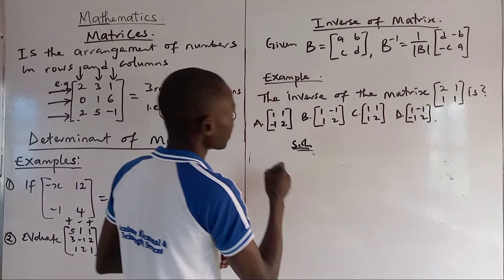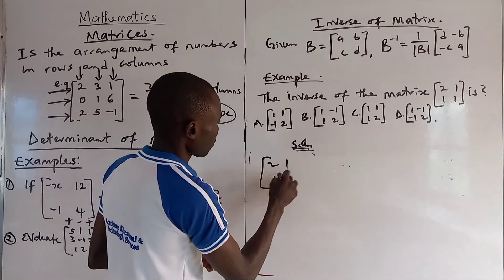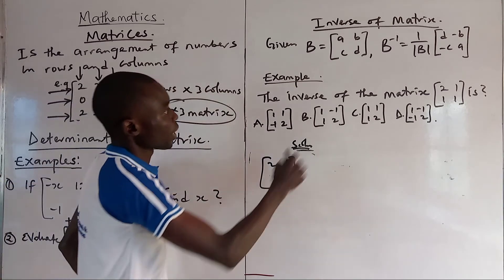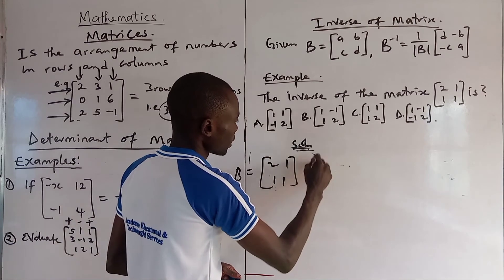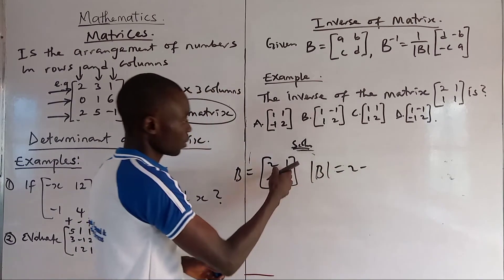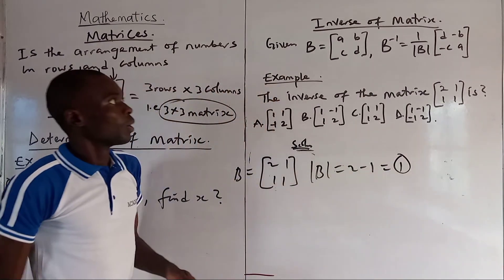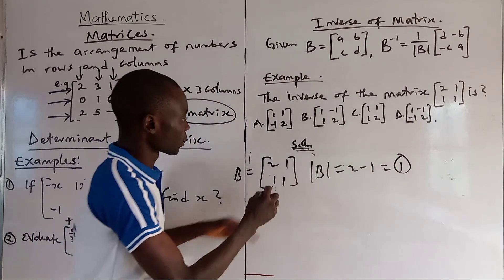Now, let's consider that at least. The inverse of these matrices, we are given these matrices 2, 1, 1, 1. We want to find the inverse. First, we can find the determinant. Let's say we call the matrix B. We will first find the determinant. The determinant is 2 times 1, which is 2, minus 1 times 1 is 1. So the determinant is 1.